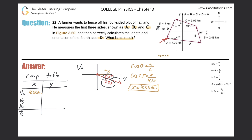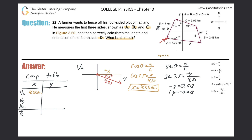Now let's calculate the Y component. We know the hypotenuse, we know this angle, and we're looking for the side opposite that angle. Therefore, we're going to use sine. Sine of theta equals the opposite over the hypotenuse. Sine of 7.5 equals negative Y over 4.70. So sine of 7.5 times 4.7 works out to be 0.613, and then Y equals negative 0.613. So let's plug that into the component table for vector A: negative 0.613. Vector A is done.